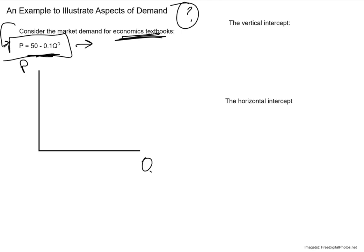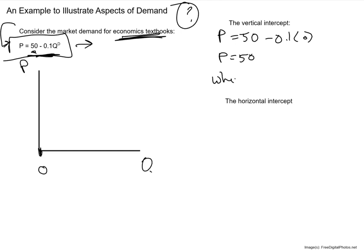We've got a vertical intercept and a downward slope. The equation is P = 50 − 0.1QD. The vertical intercept is the value of 50. The vertical intercept represents the value of the thing we're measuring vertically — price — when the thing we're measuring horizontally — quantity — equals zero. If I plug Q = 0 into my equation, P equals 50. So when P equals 50, Q equals 0.